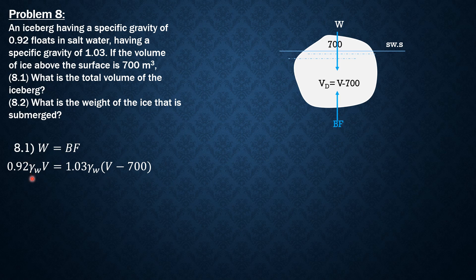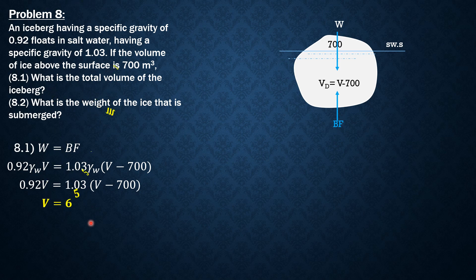Cancelling out the specific weight of water: 0.92V = 1.03(V − 700), leaving V as the only unknown. Solving for V to four significant figures gives V = 6,555 cubic meters.